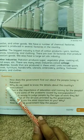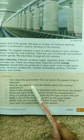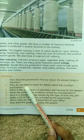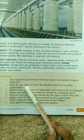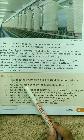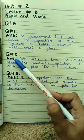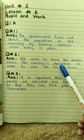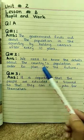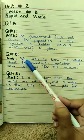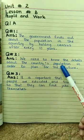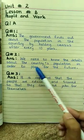Moving towards the next question. Question number 2 is: why do we need to know the details about the country's population? Here in this question it is asked why we need to collect the details or information about the people of a country. The answer is: we need to know the details about the country's population in order to plan for the future.